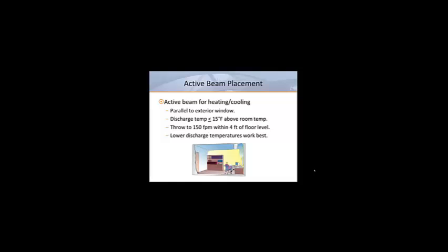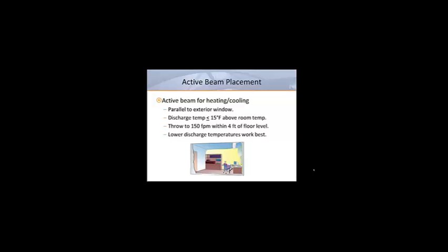When active beams are being used for heating and cooling, they should be placed parallel to any exterior glass. Since they'll be used for heating, it's important that we follow the same rules that would apply to any conventional overhead heating application. Per ASHRAE, we never want discharge temperatures to be more than 15 degrees higher than the desired room temperature. In order to ensure that we deliver ventilation air to the breathing zone, we want to make sure that our throw to 150 feet per minute is within 4 feet of the floor. In order to achieve good coverage on the glass, we know that lower discharge temperatures always work best.